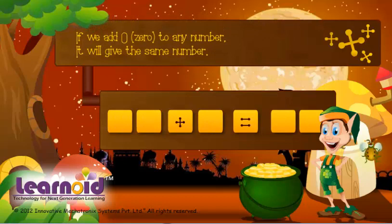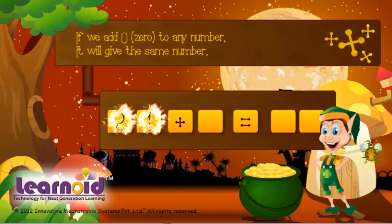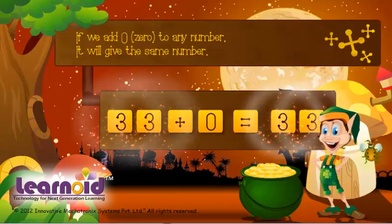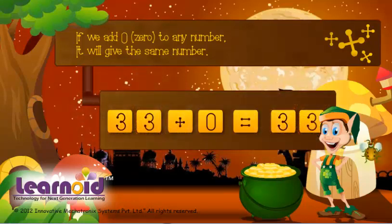If we add 0 to any number, it will give the same number. 21 plus 0 is 21. 33 plus 0 is 33.